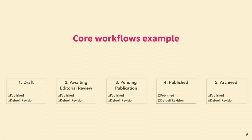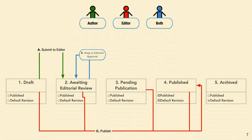That brings me to the second concept: transitions, or how you move between states. We've got three here: A, submit to editor; B, keep in editorial approval; and C, publish. They're all different colors because out of the box each transition gets a permission, so you can assign roles permissions to use the transitions. Author is labeled in green, editor in red, and transitions that can be done by both roles in blue.